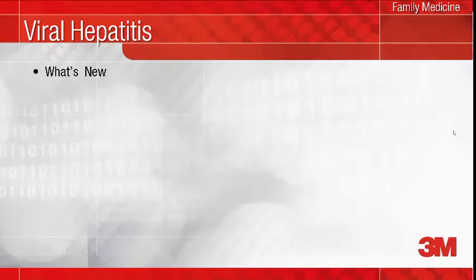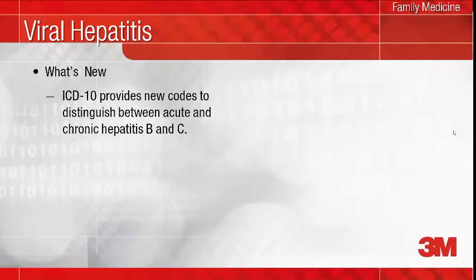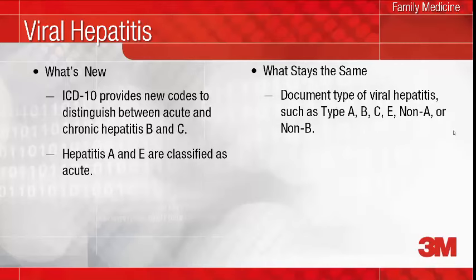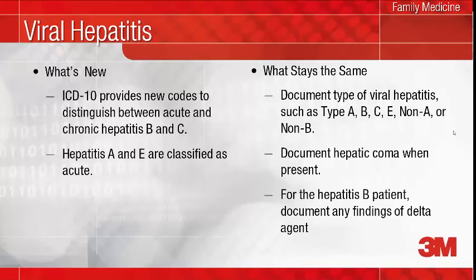What's new with viral hepatitis in ICD-10 is that there are now codes to distinguish between acute and chronic hepatitis B and C. If you don't specify the chronicity of hepatitis B and C, a code for unspecified viral hepatitis must be assigned. Hepatitis A and E are only classified as acute in ICD-10. What remains the same is that the type of hepatitis needs to be documented as well as hepatic coma if present. In addition, the findings of delta agent in the hepatitis B patient should be documented as there are codes that indicate its presence with hepatitis B. This helps to more accurately reflect the severity of illness and risk of mortality of your patients.